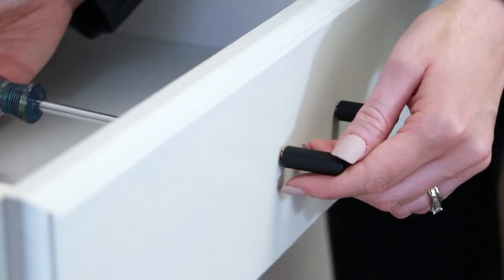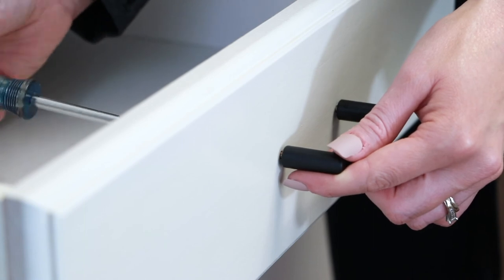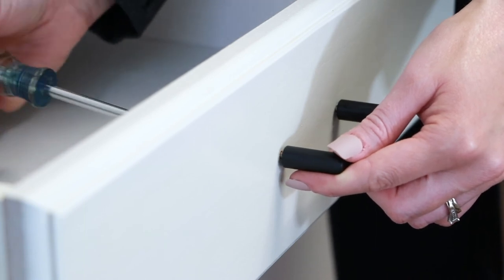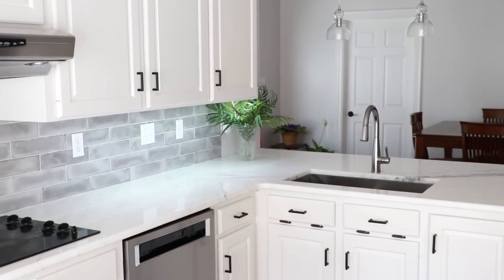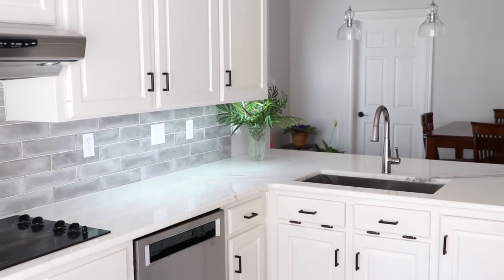Align the screw with the holes in the pull and tighten the screw. Repeat with the second screw. Install all of your pulls and step back to admire your new kitchen.